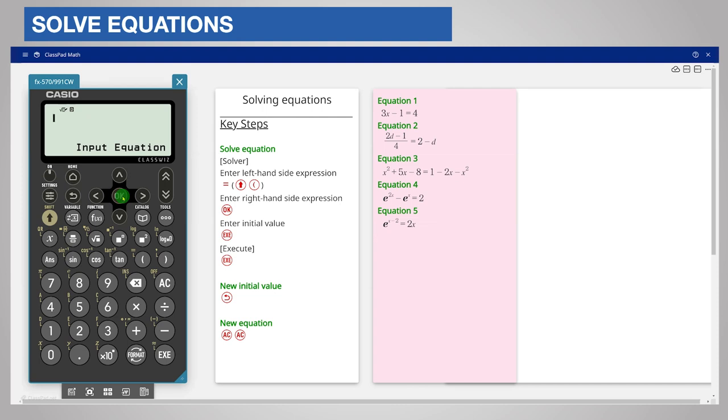Enter the left hand side 3x minus 1 using the dedicated x key. For equals press shift open brackets and now enter the right hand side of the equation 4. Press the execute or ok key to enter the equation.